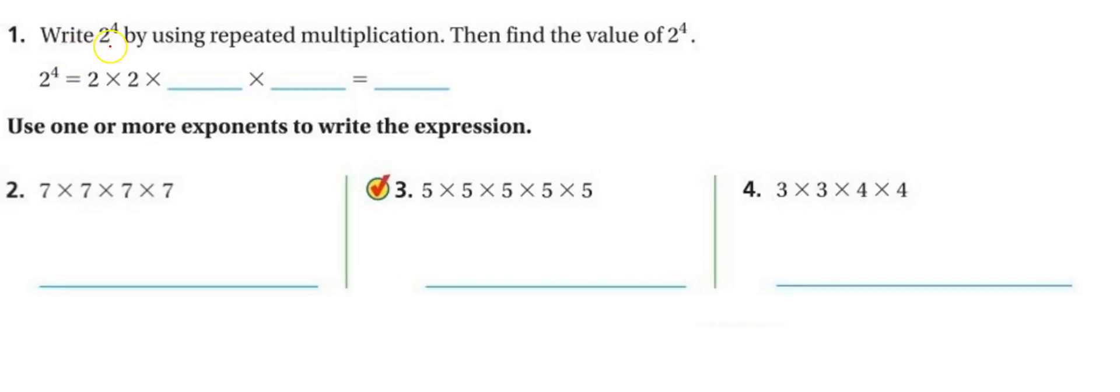All right, it says write 2 to the 4th by using repeated multiplication, then find the value of 2 to the 4th. So 2 to the 4th means 2 is repeated. How many times is 2 repeated? 4. So we have 2 times 2 times 2 times 2. So we have 2 repeated 4 times.